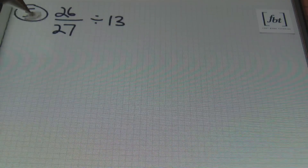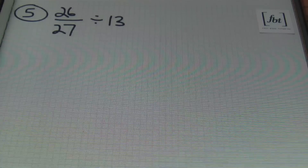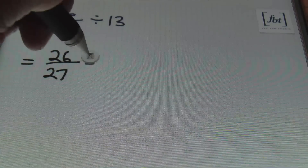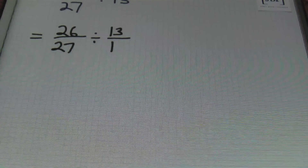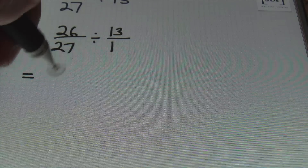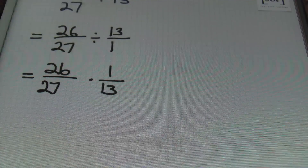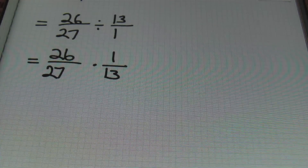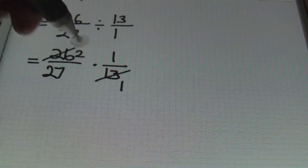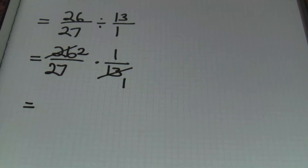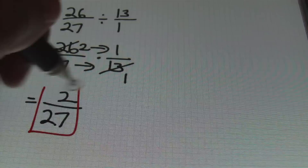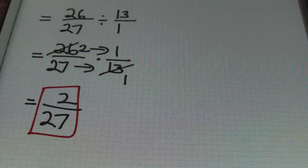In problem number 5, I have 26 27ths divided by 13. So once again I have a whole number present, and I want to change that into a fraction. I'm rewriting this as 26 27ths divided by 13 over 1. Every integer, every whole number can be placed over 1 to change it into a fraction. From here, multiplying by the reciprocal of the second fraction, I rewrite this as 26 27ths times 1 thirteenth. I notice that 13 and 26 can both be divided by 13: 13 goes into itself once and into 26 twice. Multiplying straight across: 2 times 1 is 2, and 27 times 1 is 27. So the answer is 2 27ths.